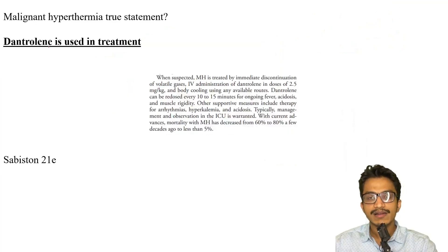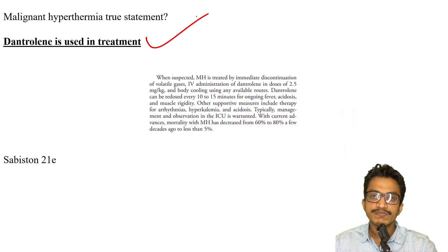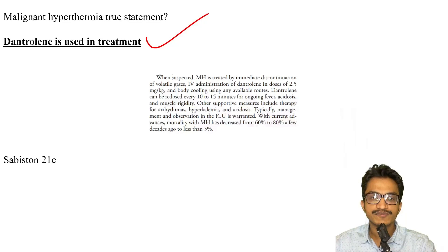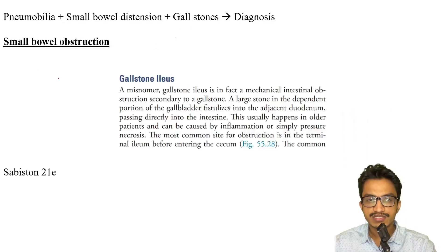Malignant hyperthermia is straightforward: dantrolene sodium is used. The treatment of choice for malignant hyperthermia is dantrolene sodium — that is the right answer.